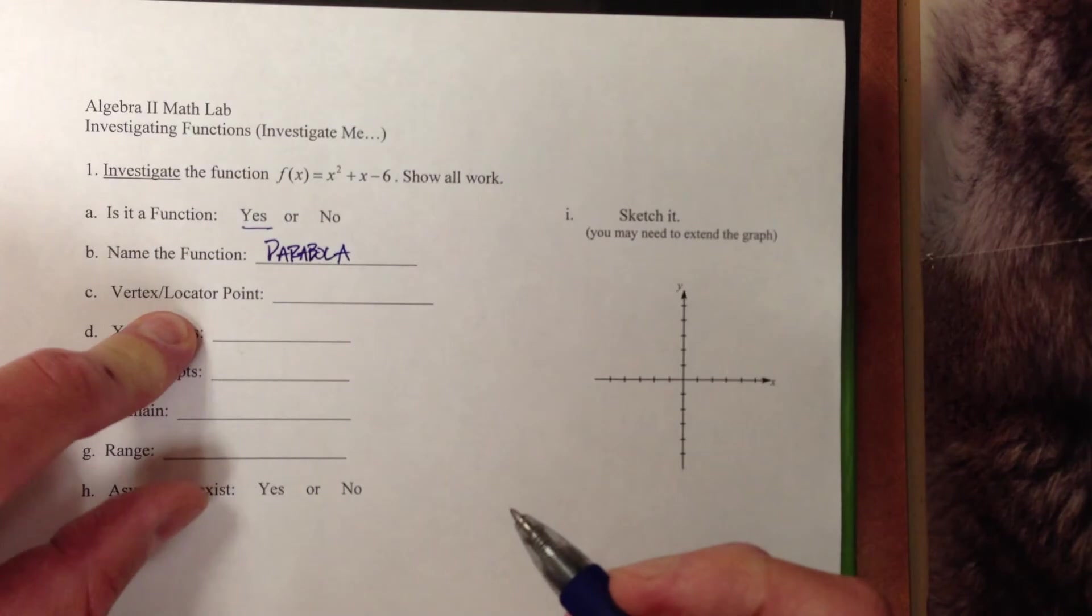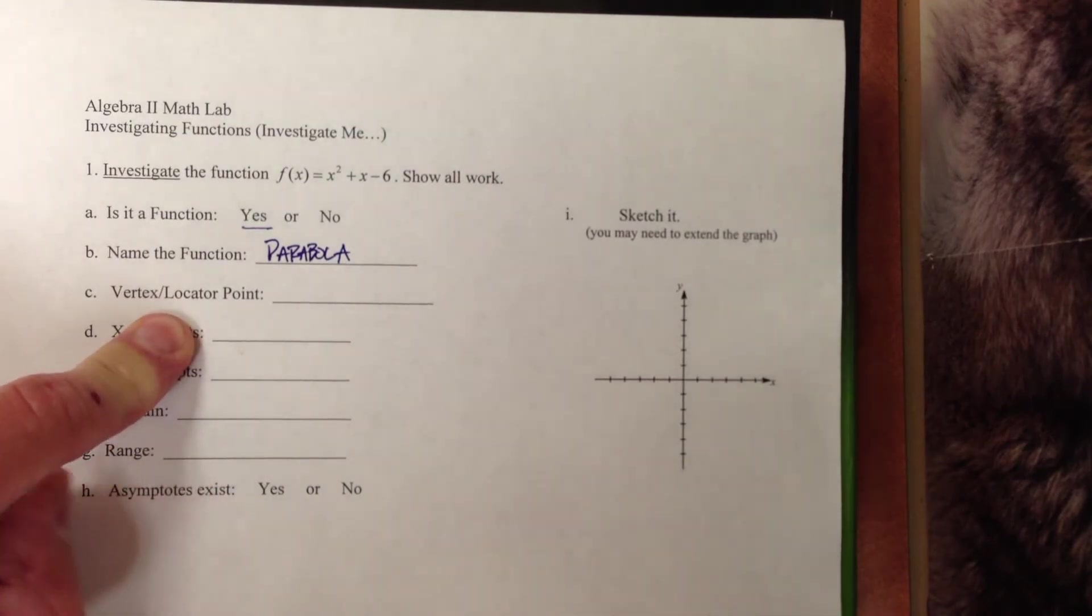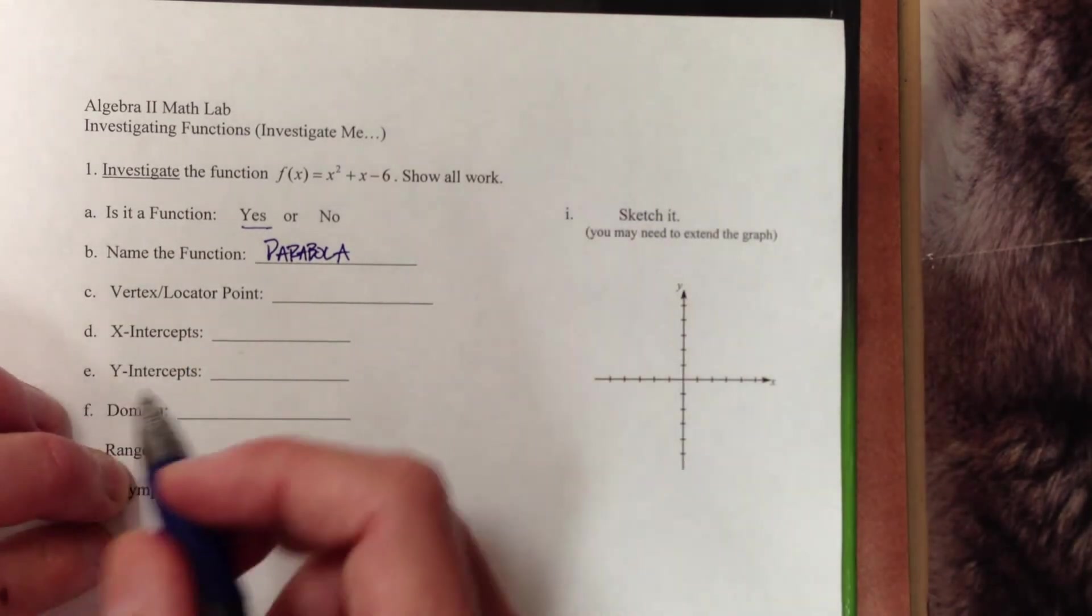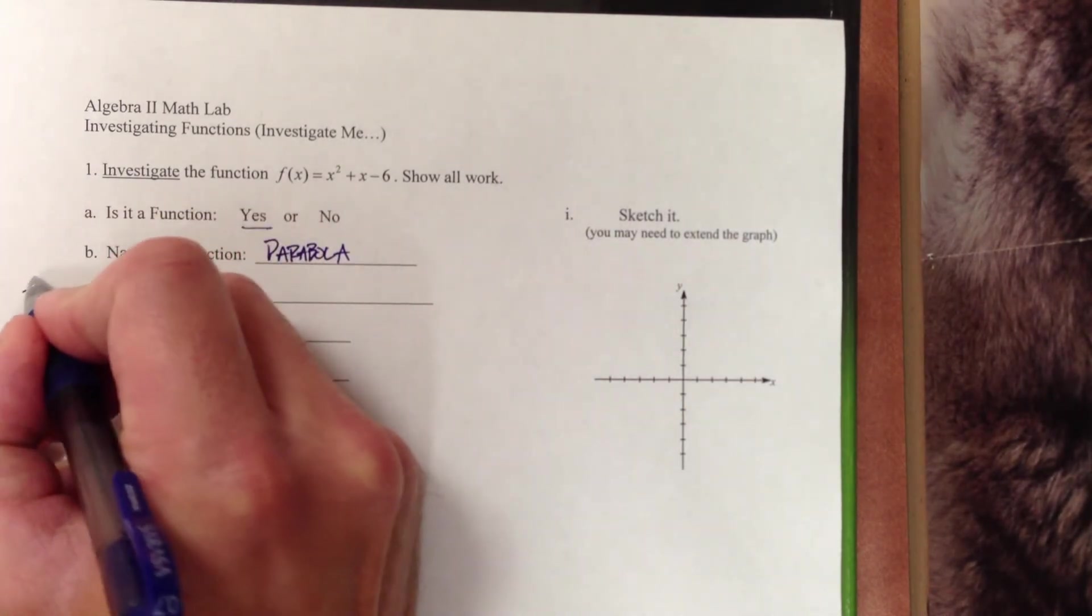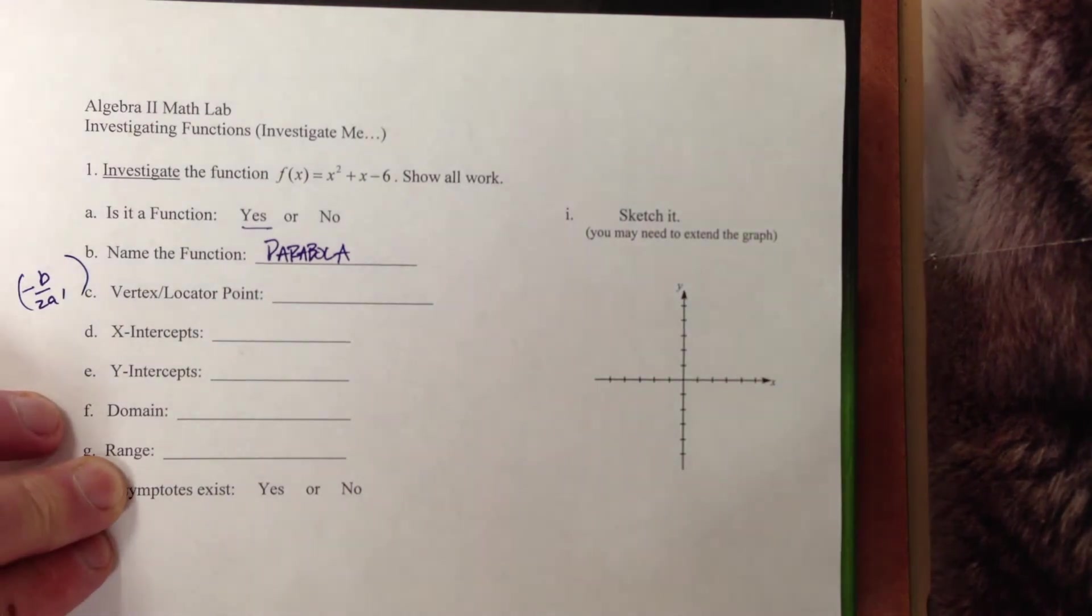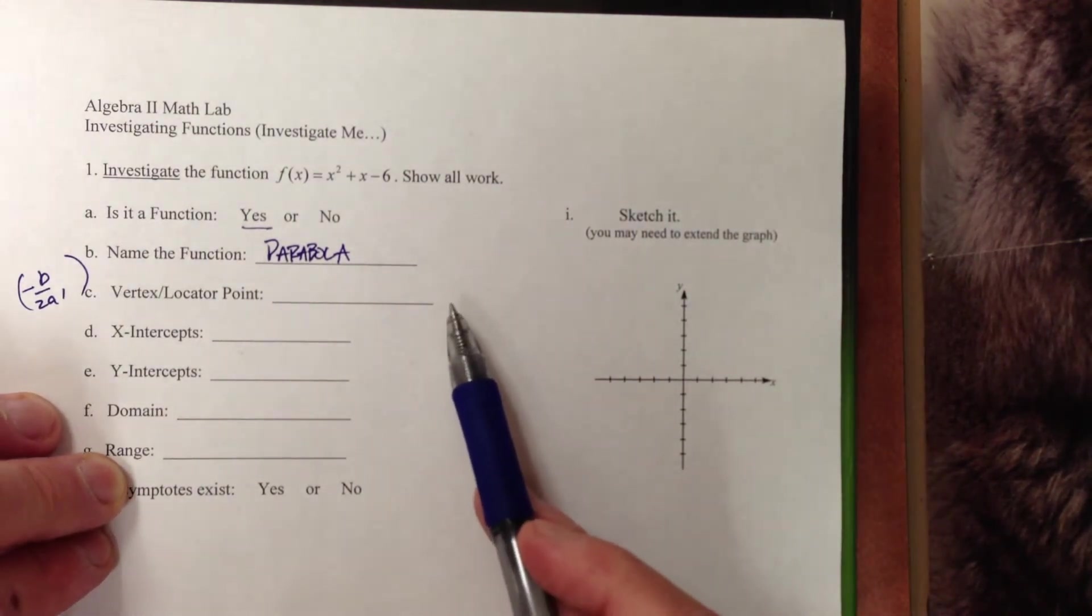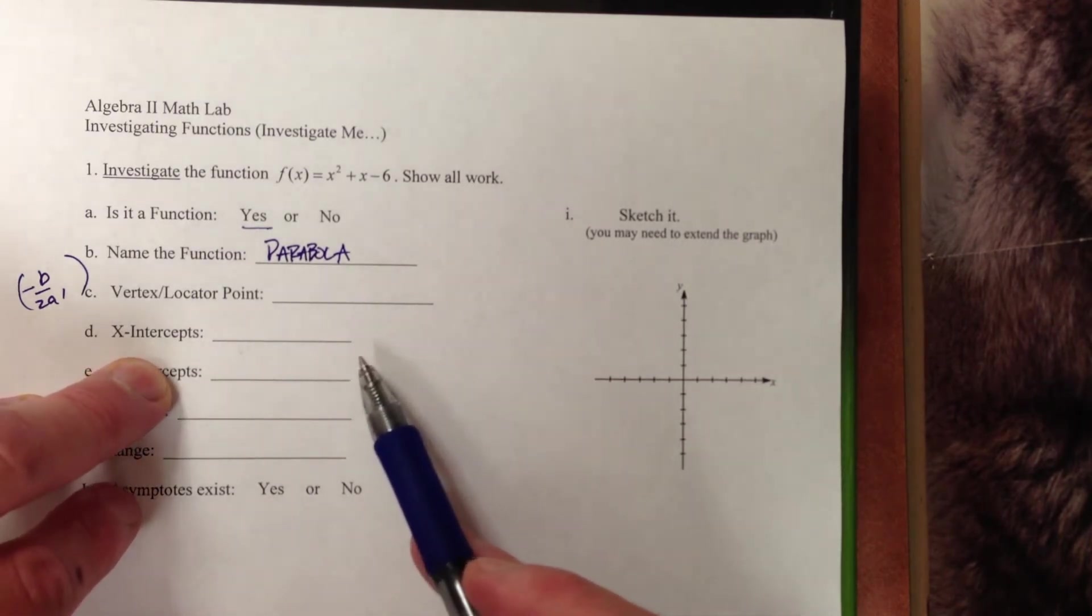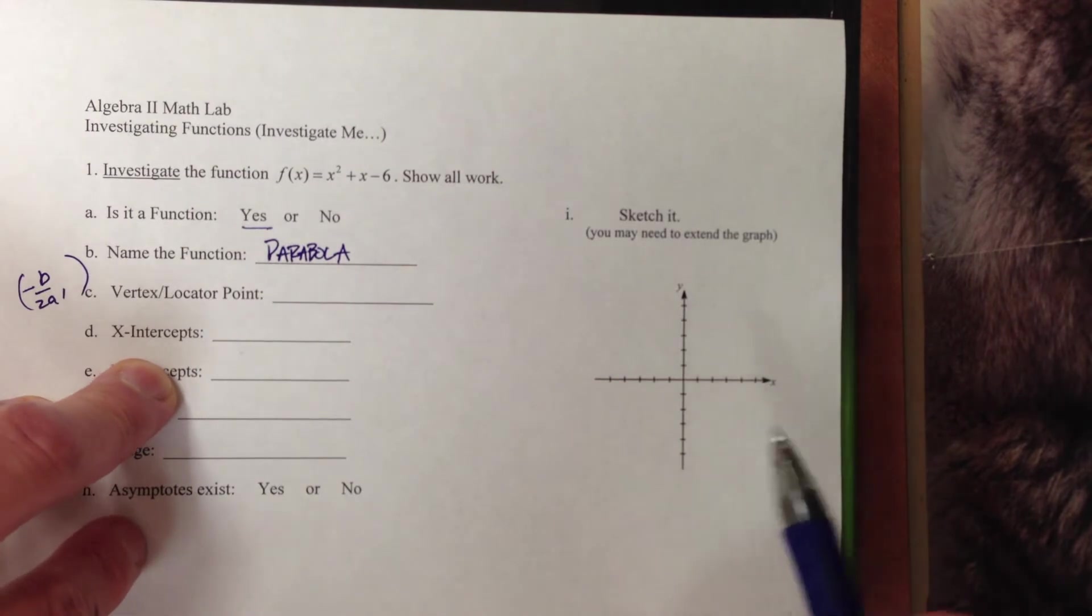Next, we're going to step into our vertex, or our locator point, probably one of the most important points of the graph. There are many, so I can't actually necessarily say that it is the most important point. One quick way of doing this would be dealing with negative b over 2a, and then plugging that back into our function to get my y value. There is another technique that I'll jump into a little bit later. Once we have our x-intercepts, we can average those two x-intercepts to find the axis of symmetry.